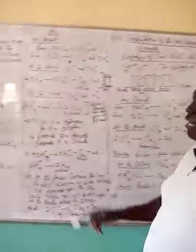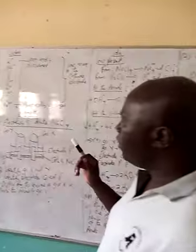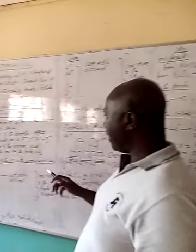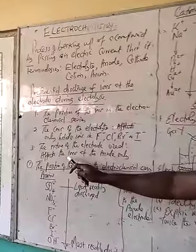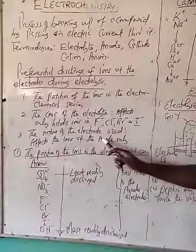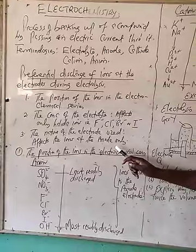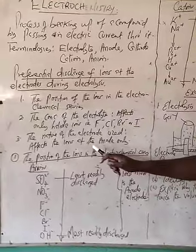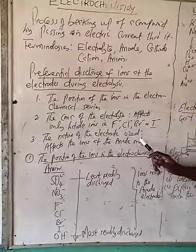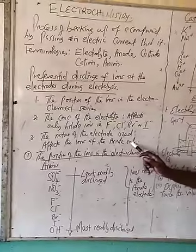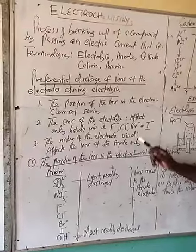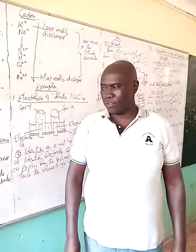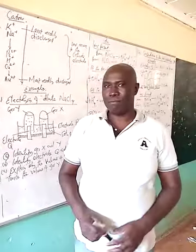We are moving on to the third factor — the nature of the electrode used. This one will only affect the ions produced at the anode, and we are going to look at it in our next lesson. Thank you. Let us continue next time.